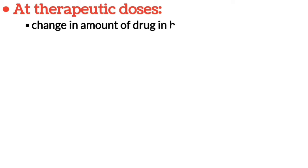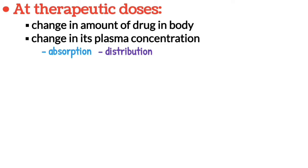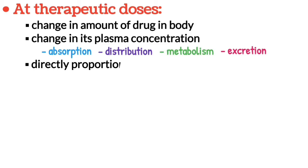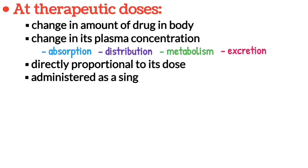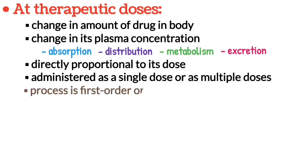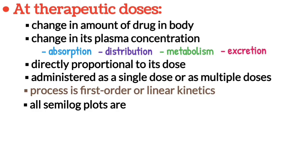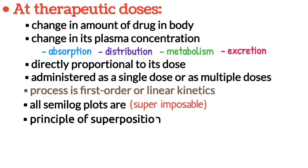In most cases at therapeutic doses, the change in the amount of drug in the body or the change in its plasma concentration due to absorption, distribution, binding, metabolism or excretion is directly proportional to its dose, whether administered as a single dose or as multiple doses. In such situations, the rate processes are said to follow first-order or linear kinetics, and all semi-log plots of C versus T for different doses when corrected for dose administered are superimposable. This is called the principle of superposition.